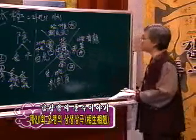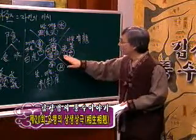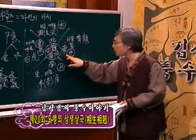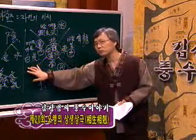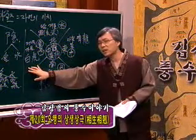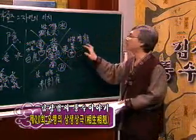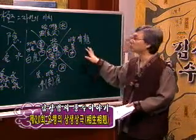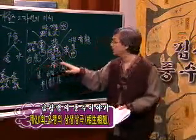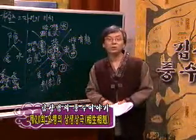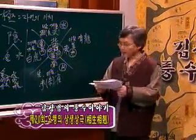다시 한 번 말씀드립니다. 풍수에서는 동서남북에 상관없이 좌측에 있으면 좌청룡, 우측에 있으면 우백호라 칭하지, 동청룡·서백호라고 칭하지는 않는다는 것입니다.